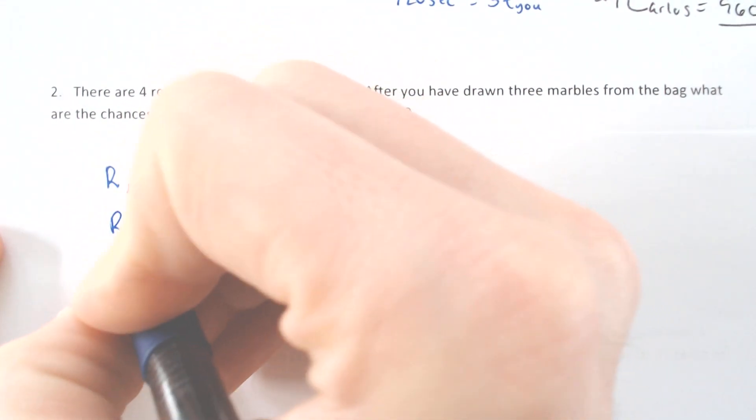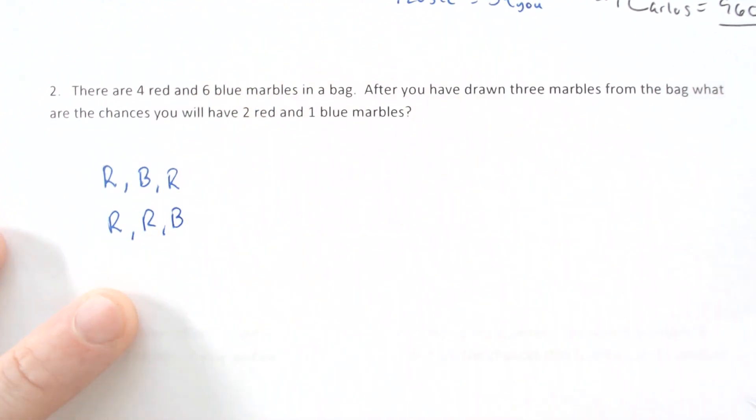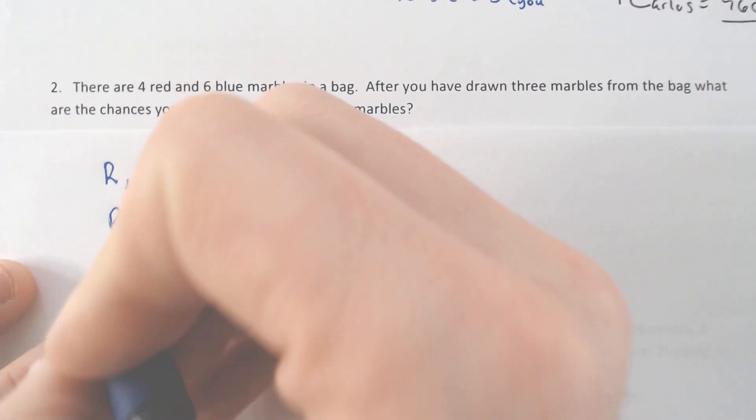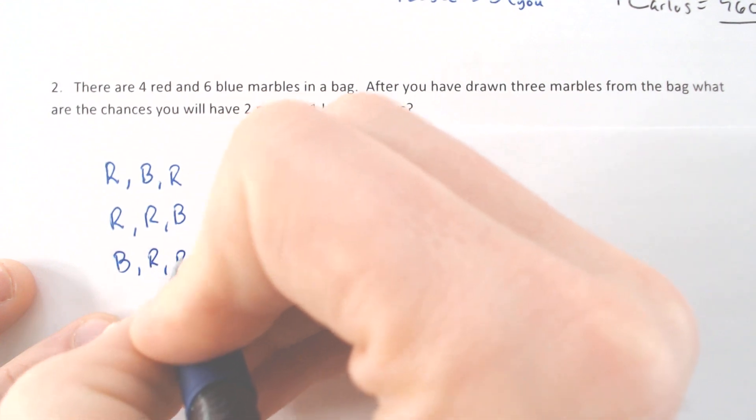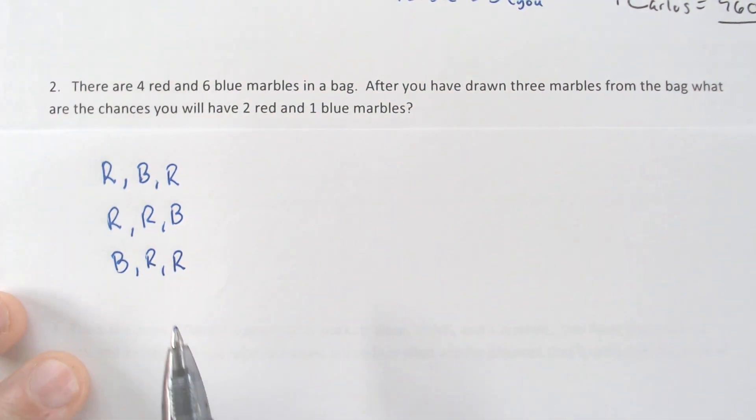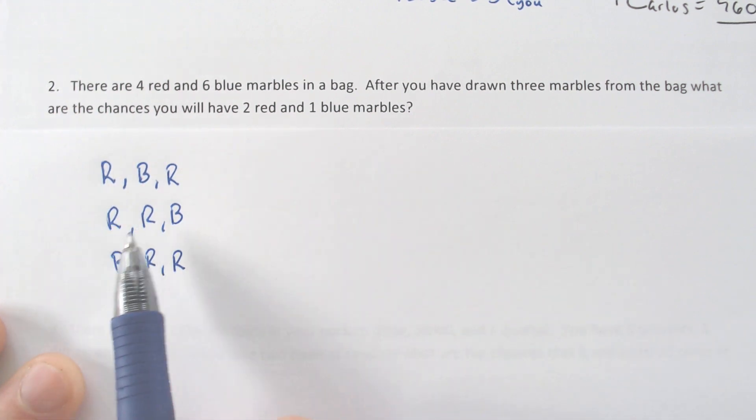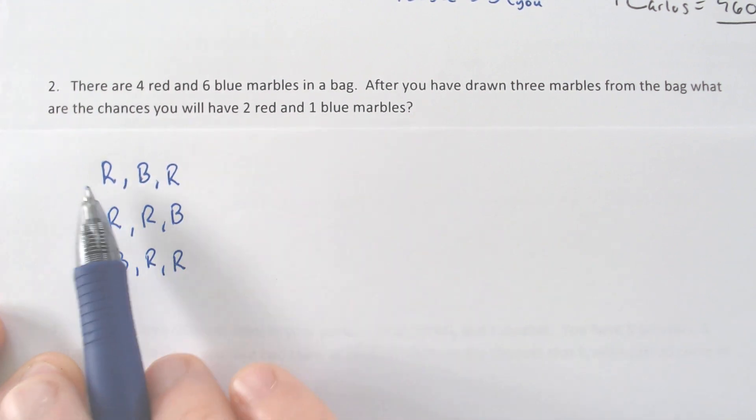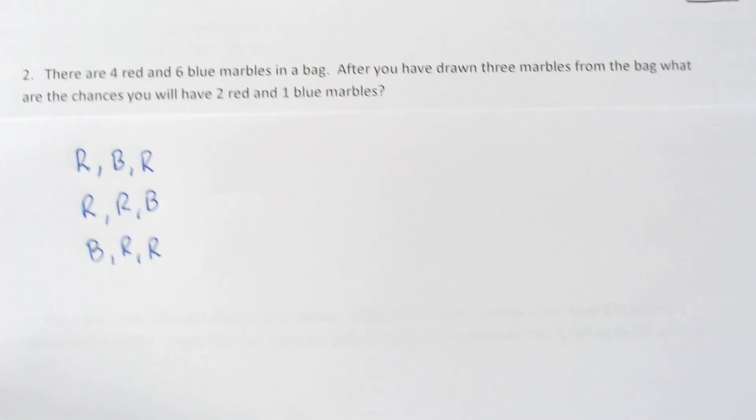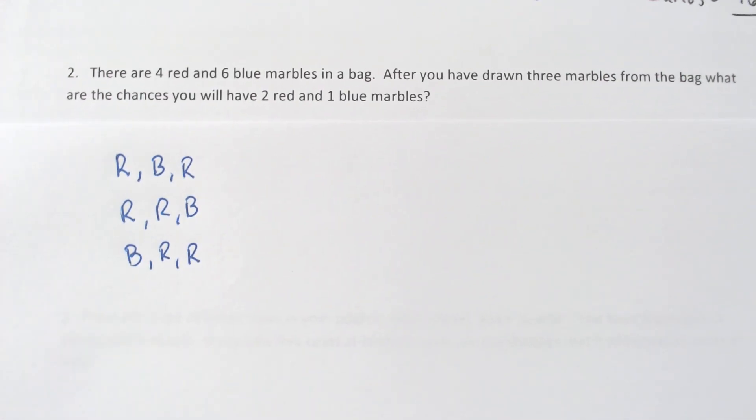So that means that you could get a red, then you could get a blue, and then you could get a red, or you could get a red and a red and a blue like it says in the problem. Or you could get a blue followed by a red followed by a red. And let's make sure I didn't miss any. Are there any other possibilities there that I didn't miss? So we got red, red, blue, red, blue, red, and blue, red, red. I think that's all of them.